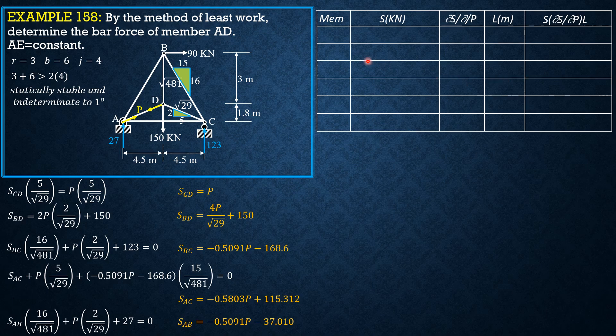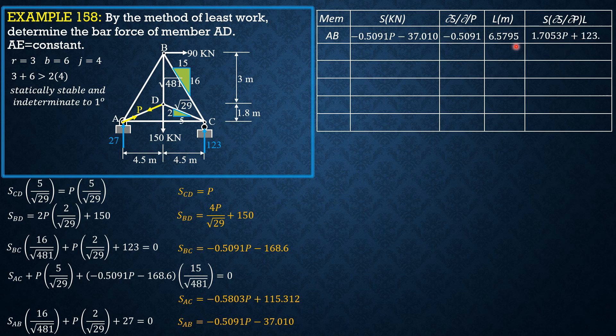Then in alphabetical order we have AB first, which is negative 0.5091P minus 37.010. The partial derivative with respect to P, negative 0.5091. The length of AB is square root of 4.5 square plus 4.8 square, so that's 6.5795 meters, then the product.